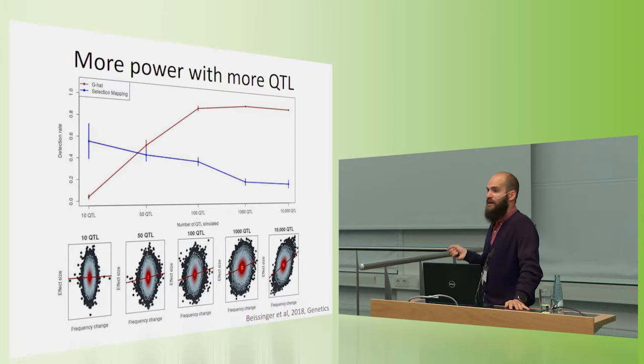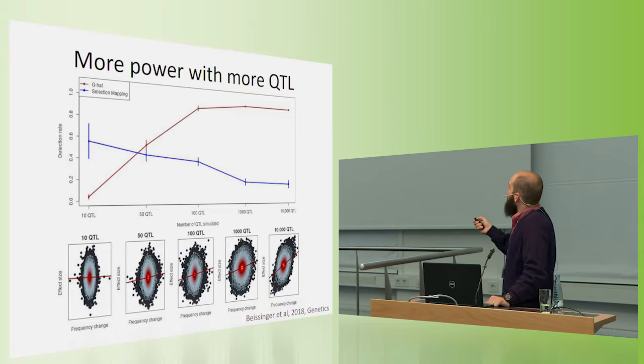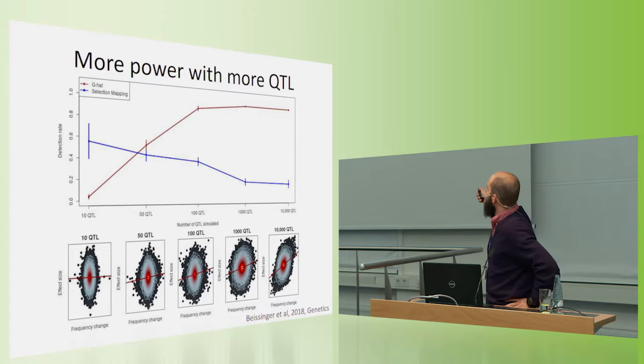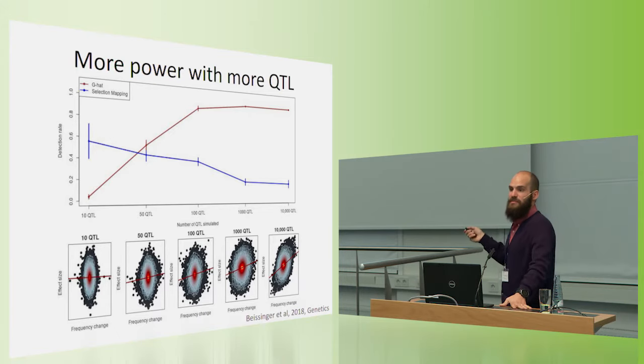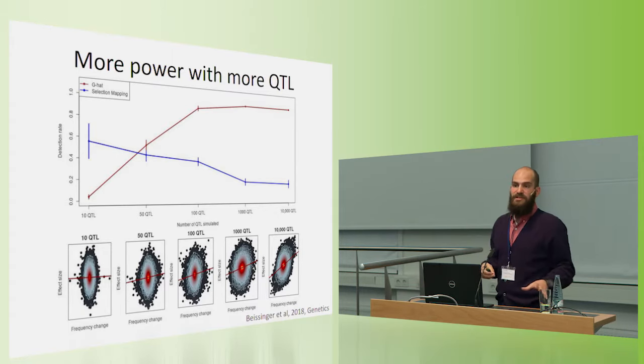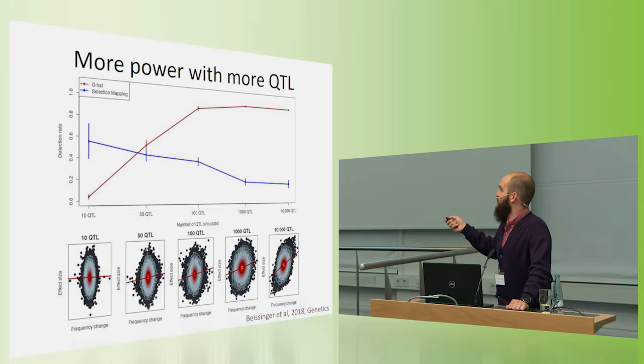What's more exciting is that unlike traditional mapping approaches where we're trying to map the genes that are important, when we're mapping or identifying the phenotypes that have been selected, we actually get more power as we have more QTL, each with smaller effects. So here in the red line, this is the power of G-hat in a 10 QTL scenario up to a 10,000 QTL scenario. And you can see it just gets better and better as we have more QTL. And this is assuming the genetic variance is unchanged. So more QTL each of a smaller effect. On the other hand, if we're doing traditional selection mapping, and in this case I compared it to FST selection mapping, we have less power, obviously, as we have more QTL.